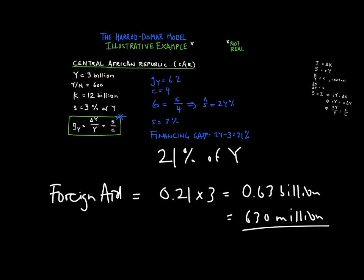Well, there we have it. If we want the Central African Republic to grow at 6%, all we need to do is supply them with $630 million of foreign aid. It's very easy. Of course, the real world is not this easy and this example is only illustrative. But there you have it.